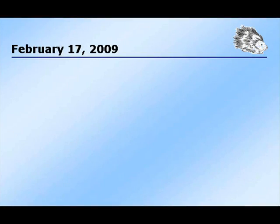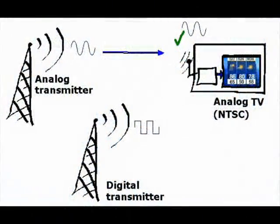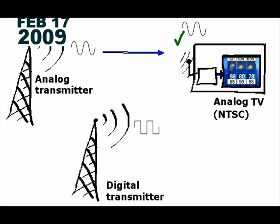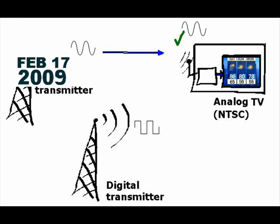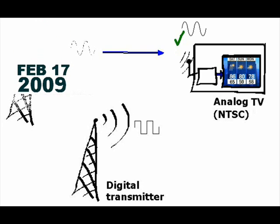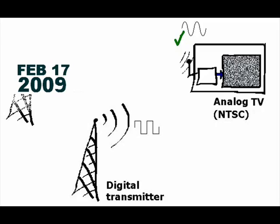Why is February 17, 2009 a special date? Before this date, analog transmission towers will be transmitting analog TV signals and analog TVs will be receiving them. But on February 17, 2009, they will stop transmitting. Since there will not be any more analog TV signals being transmitted, the analog TVs won't be able to receive anything. Only the digital TV signal will be transmitted, but analog TVs won't be able to receive these new signals.